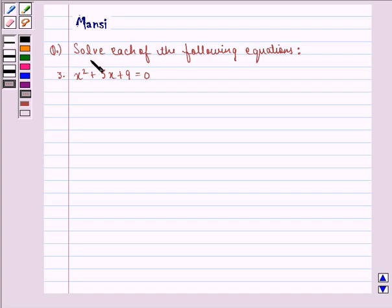The question here says solve each of the following equations. The third equation is x squared plus 3x plus 9 equal to 0.